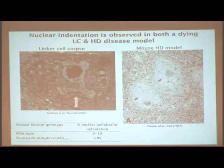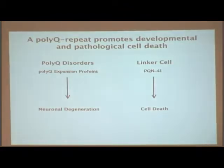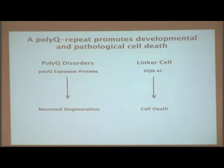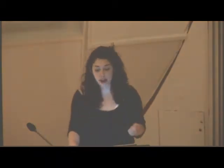One is a normal cell death pathway — a normal linker cell dying — and in this case a pathological cell death. To put it in perspective: in the linker cell, PQN-41 is required for the cell to die, and this is a normal cell death pathway. We know that polyglutamine expansion proteins are required for neurodegeneration, and perhaps the way these cells are dying reflects a fundamental cell death pathway that originates in development.